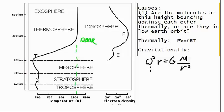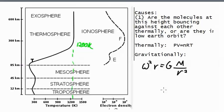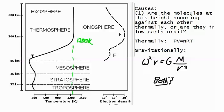Throughout the troposphere, stratosphere, and mesosphere, there is a fairly low temperature. It's like the cool underbelly of the atmospheric place, and then all of a sudden there's a jump in temperature up to 1200 Kelvin, and it stays consistently around 1200 Kelvin throughout that place called the thermosphere. My question was, are the molecules at this height bouncing against each other thermally, or are they in low Earth orbit?